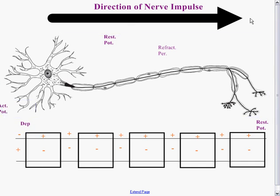Normally what would happen is the area of the membrane right next to the depolarized region would immediately depolarize afterwards. However, this is not going to occur here. Where myelin sheaths are, there are no sodium gates or channels — all the channels are concentrated into the nodes of Ranvier. So depolarization cannot occur within the myelin sheath and can only occur at the nodes of Ranvier. This depolarization will therefore cause depolarization at the next node of Ranvier.